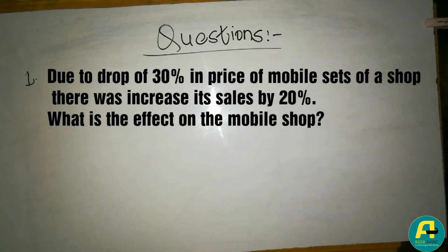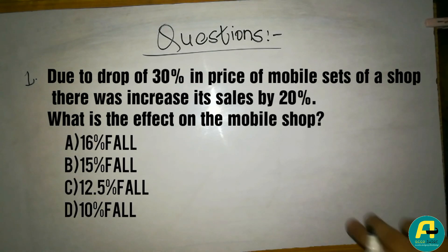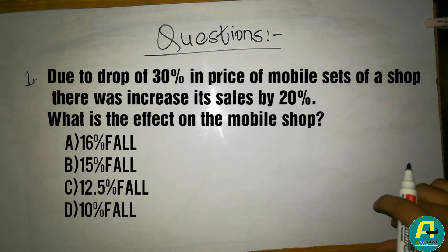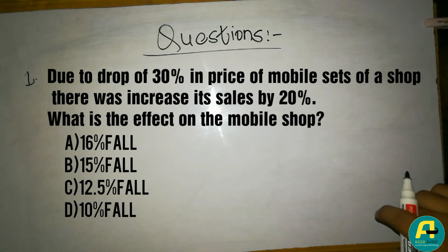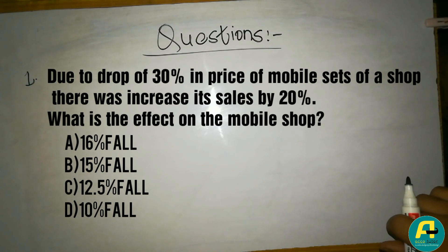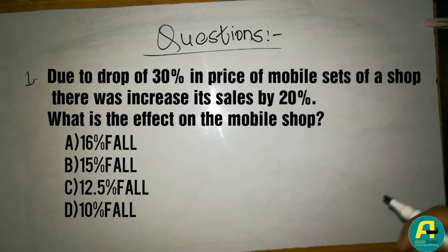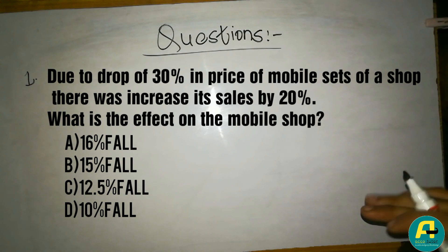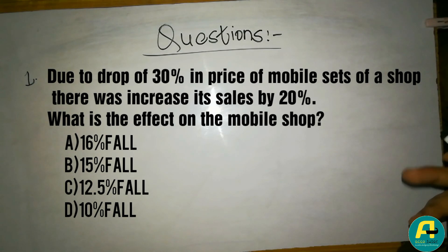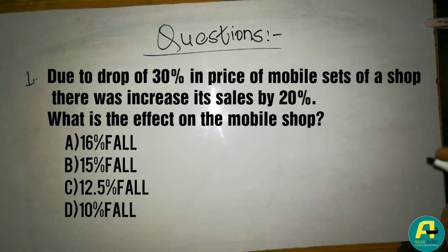Question number one is related to percentage. Due to a drop of 30% in the price of a mobile set in a shop, there was an increase in sale by 20%. What is the effect on the revenue of the mobile shop? Options: 16% fall, 15% fall, 12.5% fall, or 10% fall.